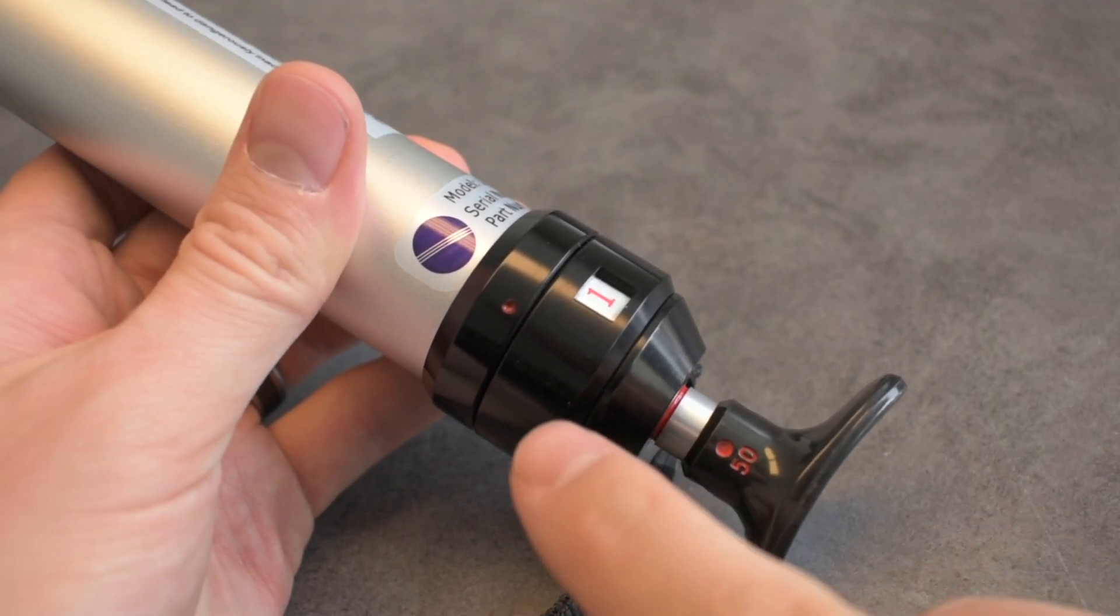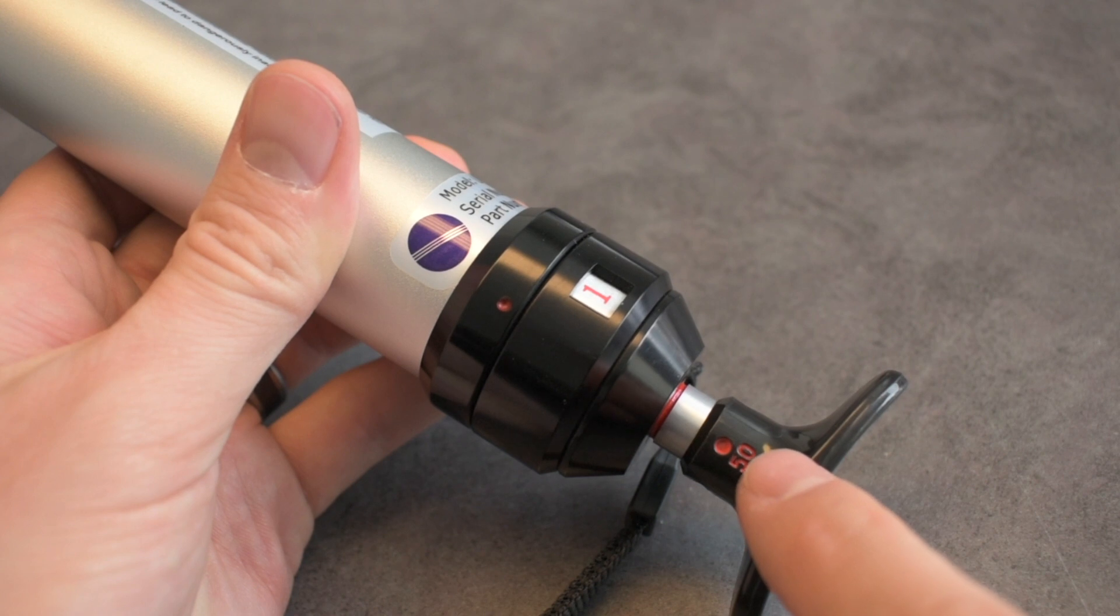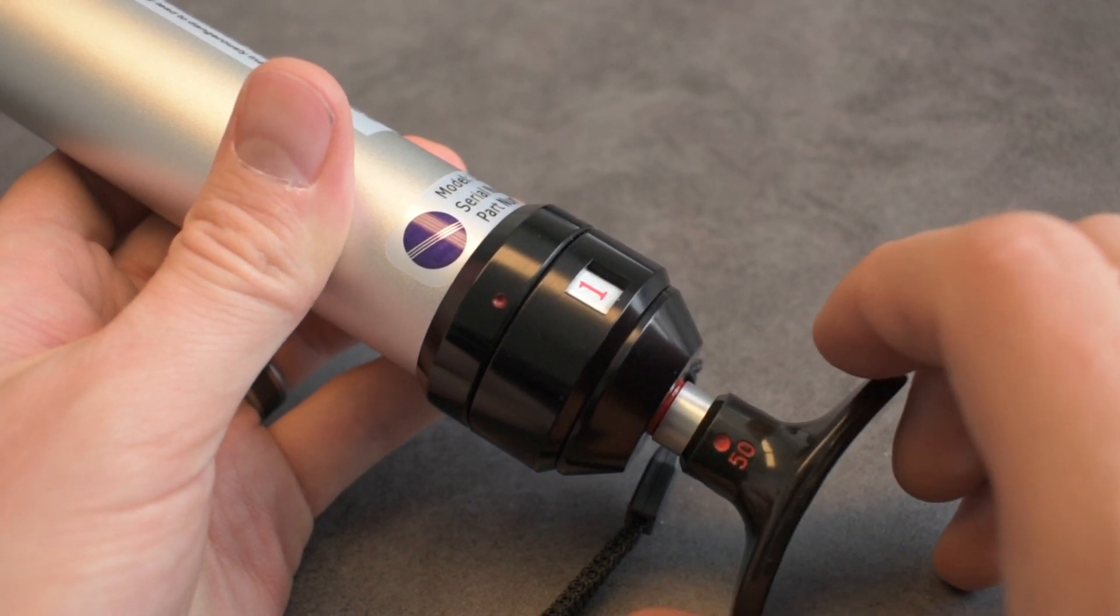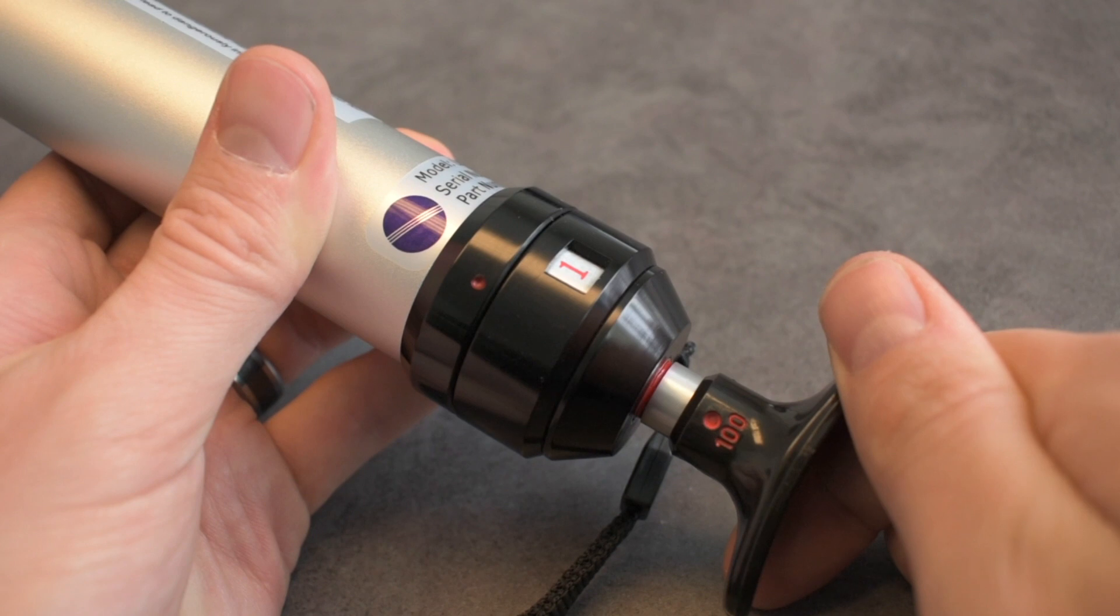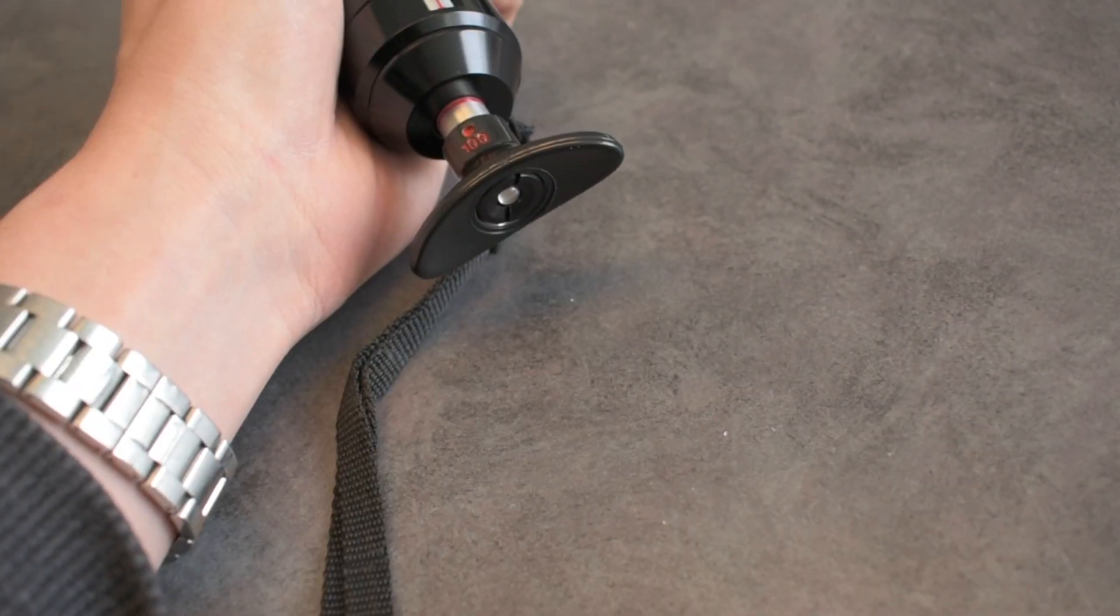The dot on the handle and the dot on the body of the pump need to be lined up. The dot on the handle will also have a 50 or 100 on it. If you have it on 50, that means it will only take a half draw stroke. If you have it on 100, it will take a full draw stroke.